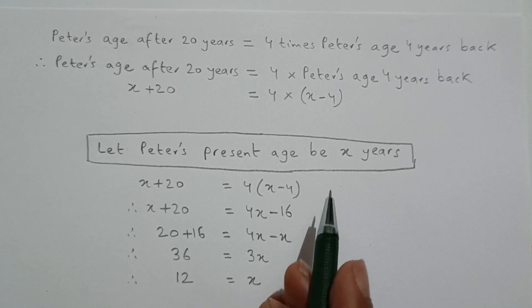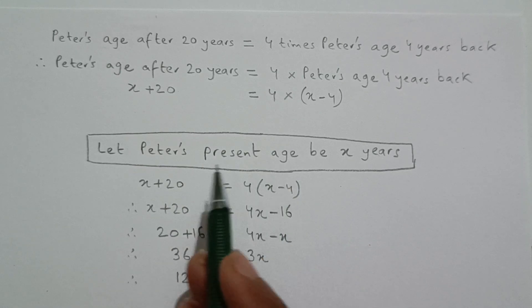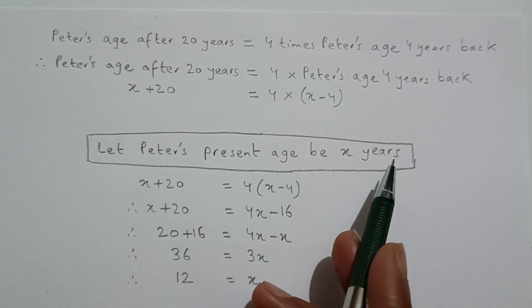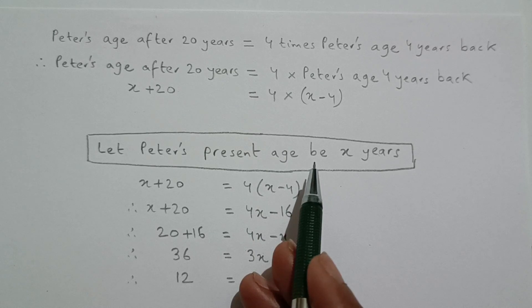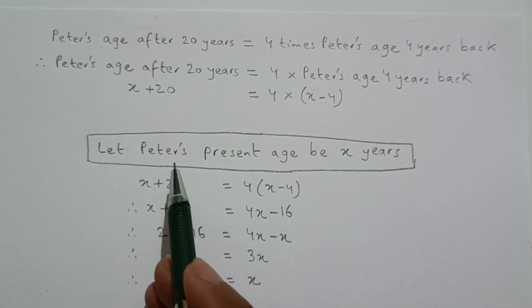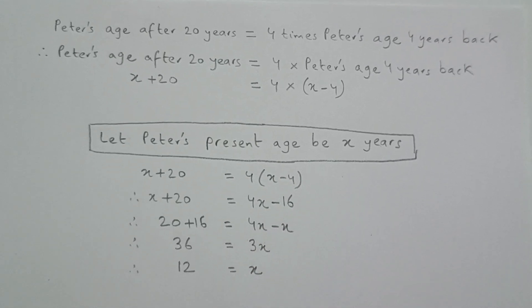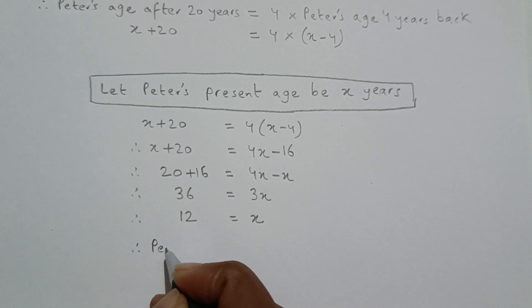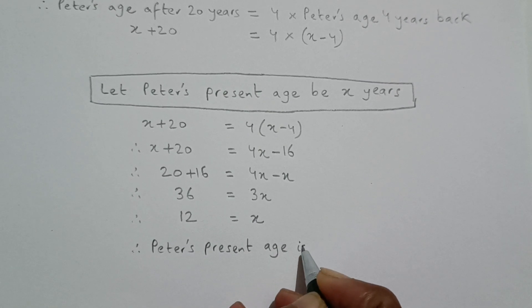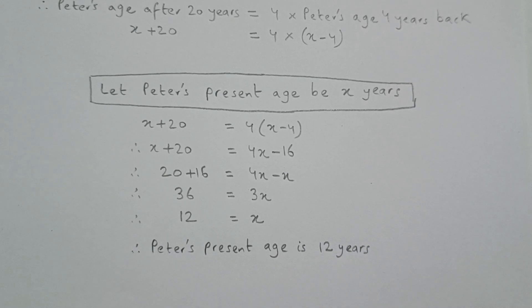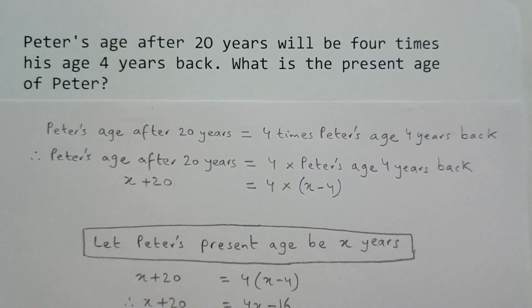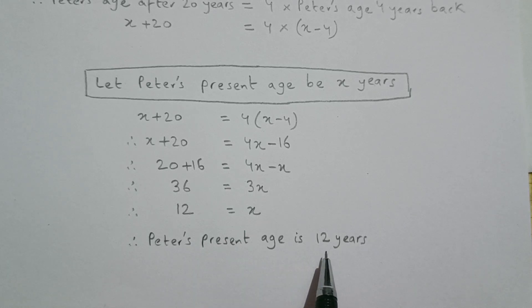And what is X? X is Peter's present age. In our declaration, we said let Peter's present age be X years. So X is 12, which means Peter's present age is 12 years. And that is what we had to find in this question — the present age of Peter. Peter's present age is 12 years.